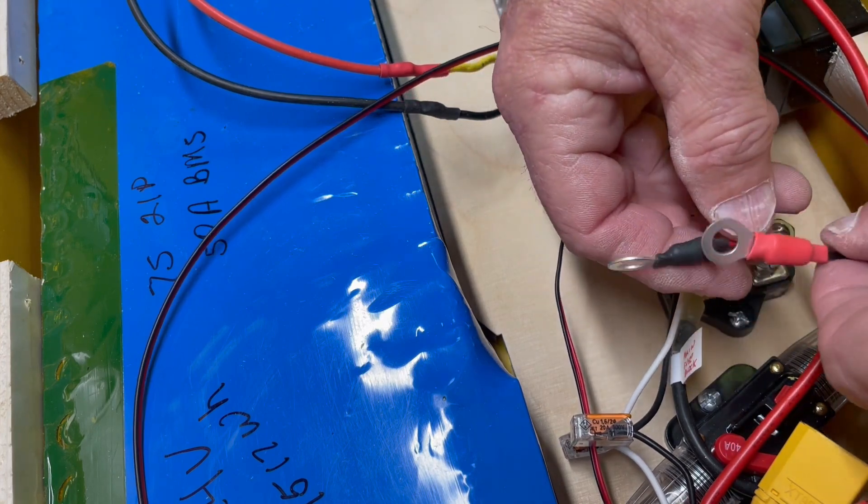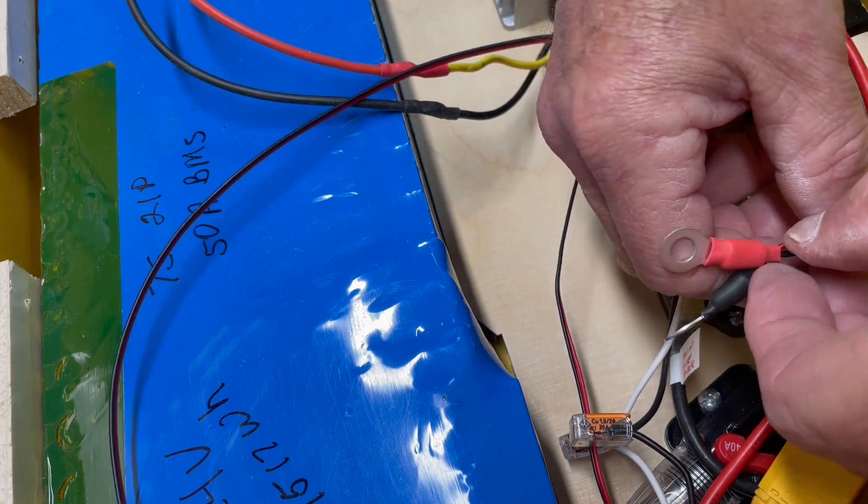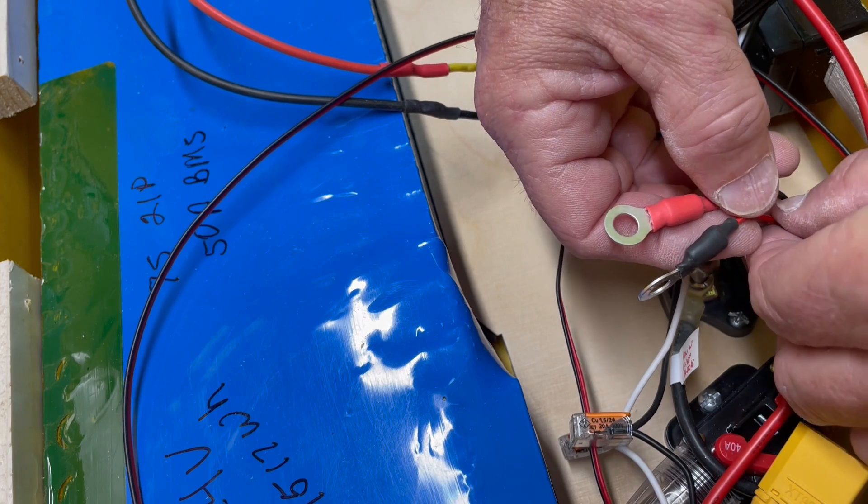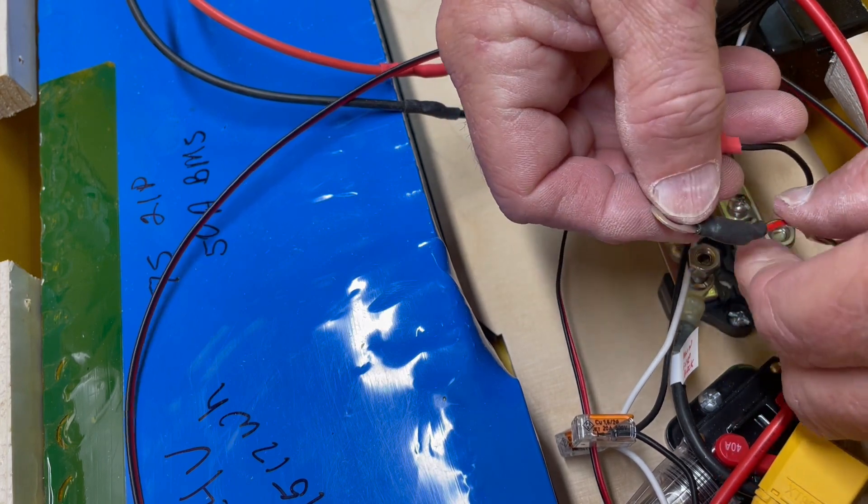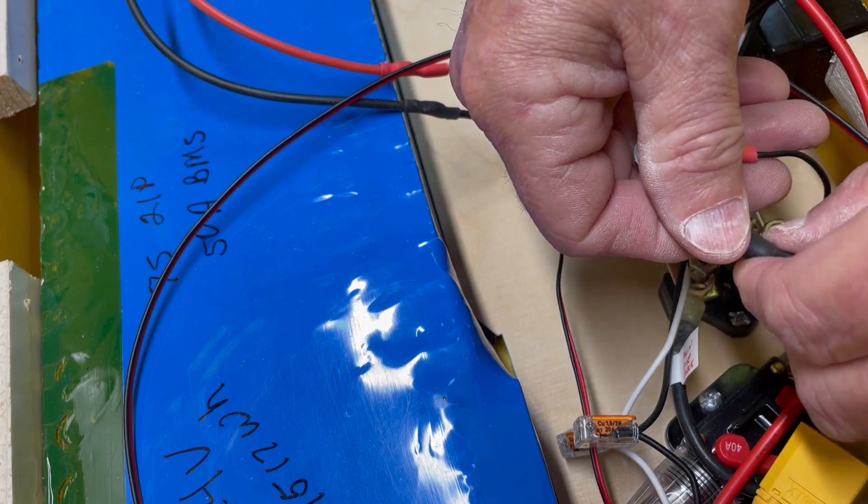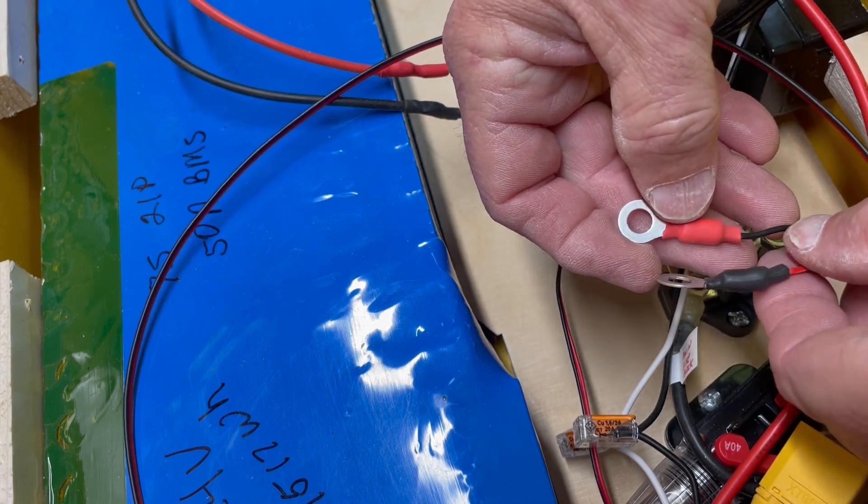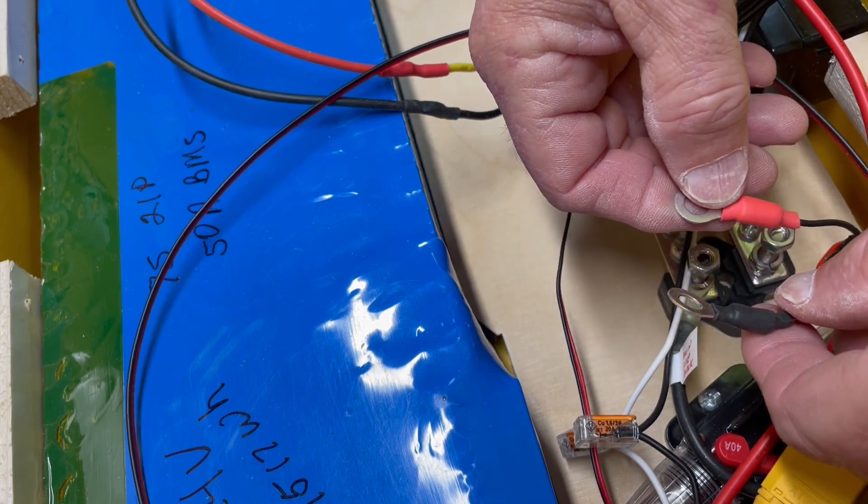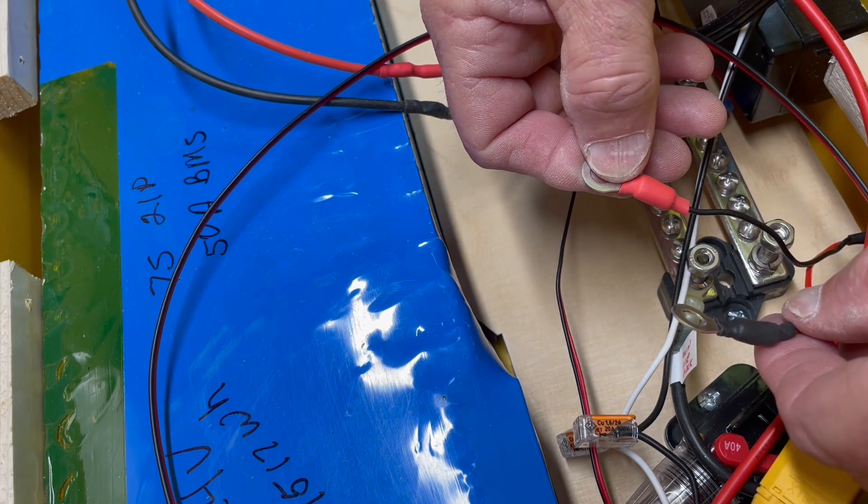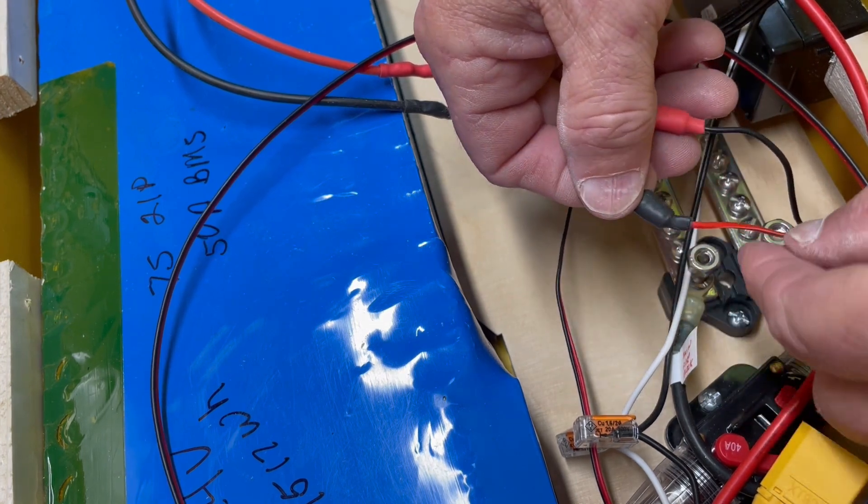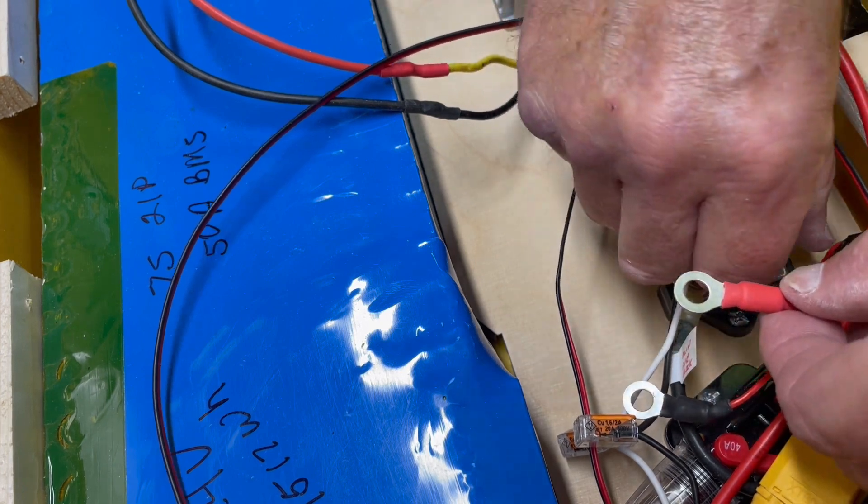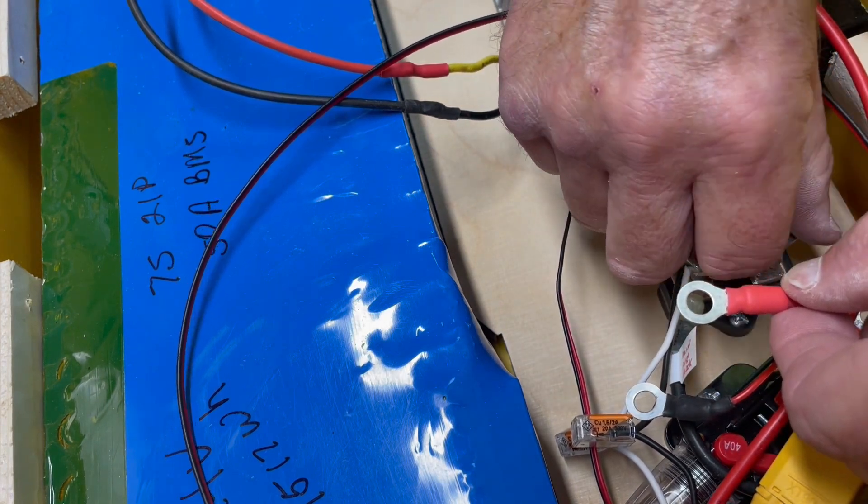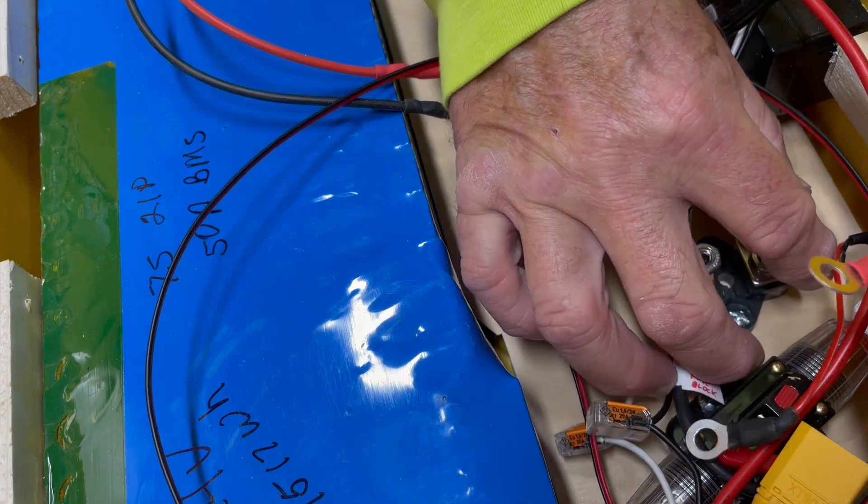For these, you have to watch buying Chinese parts. They don't always know what positive and negative are. I checked these before I installed it, and I found that the wires were reversed. So the black one is actually supposed to be red, and the red one is actually supposed to be black. So one's positive, one's negative. They're just totally screwed up.